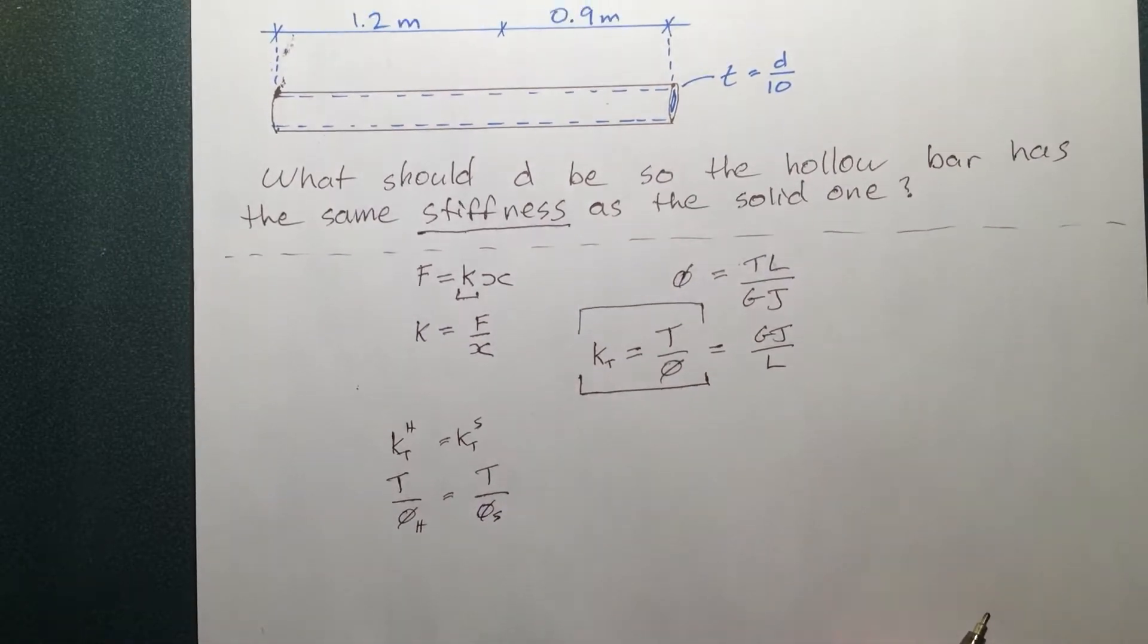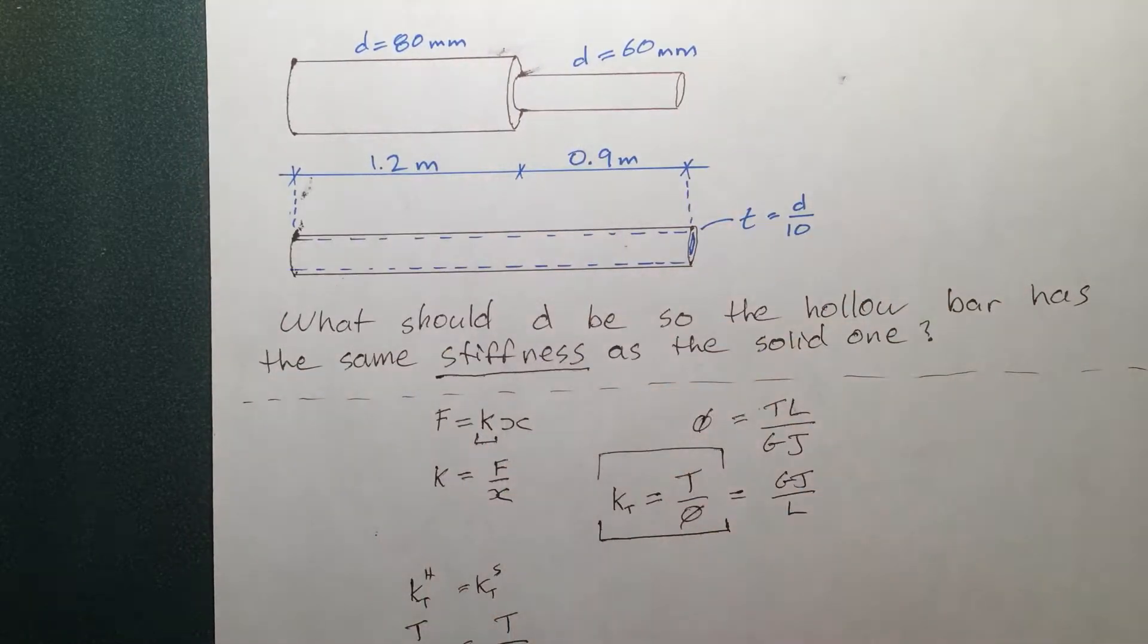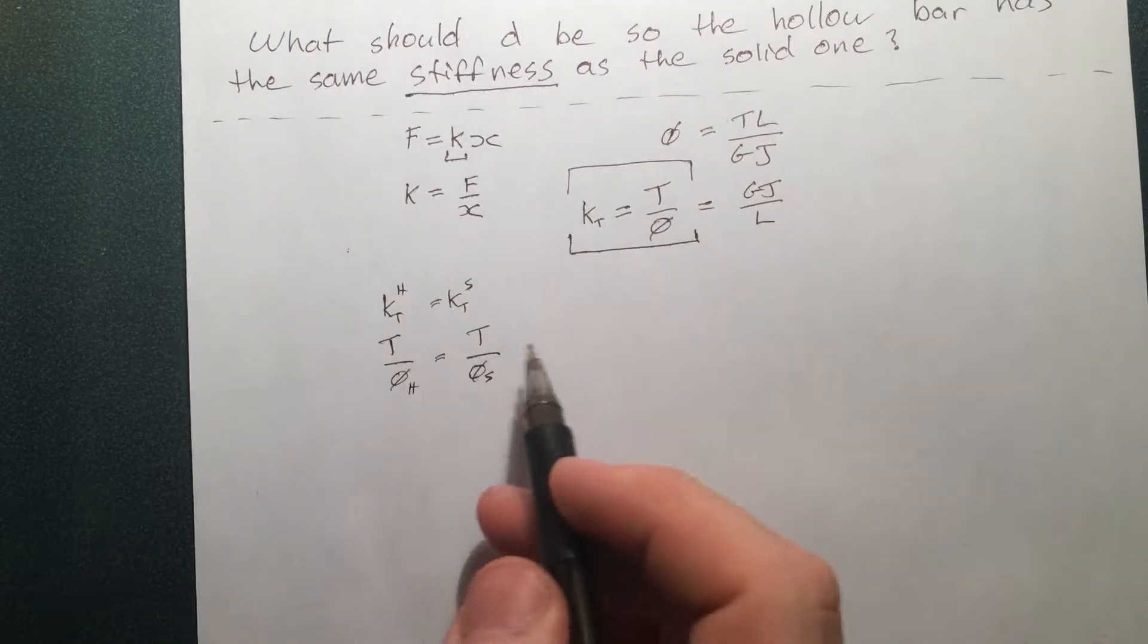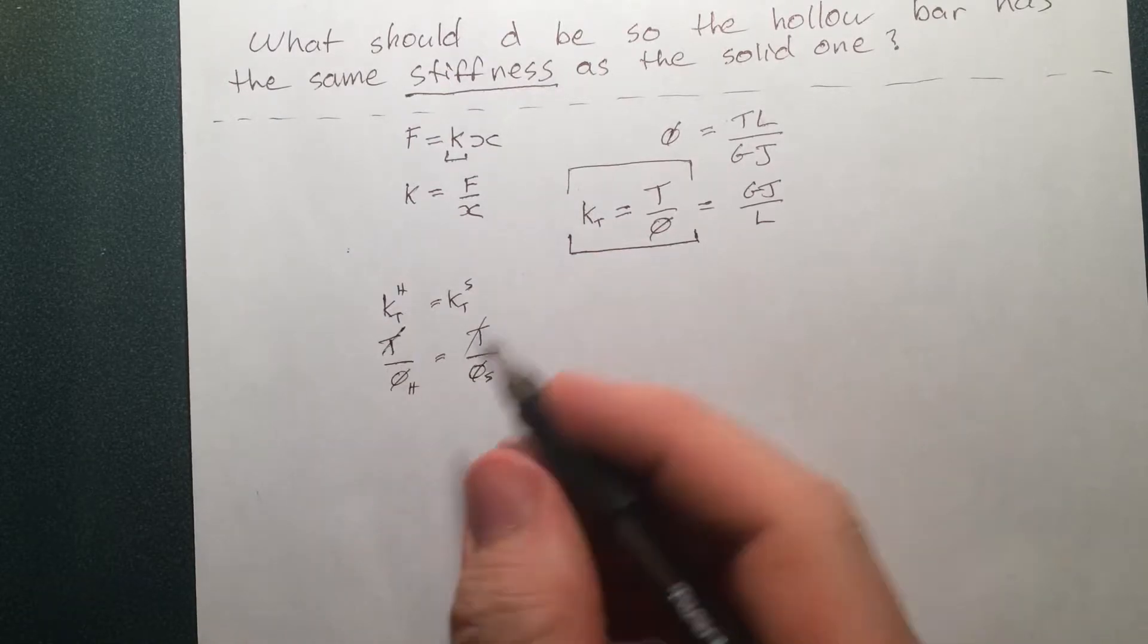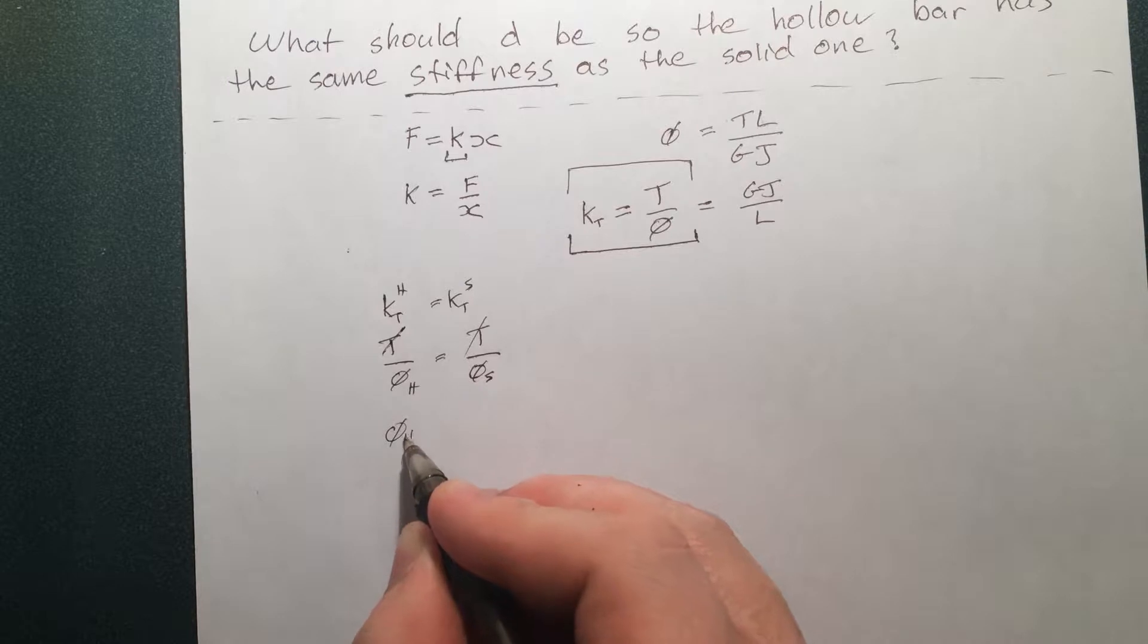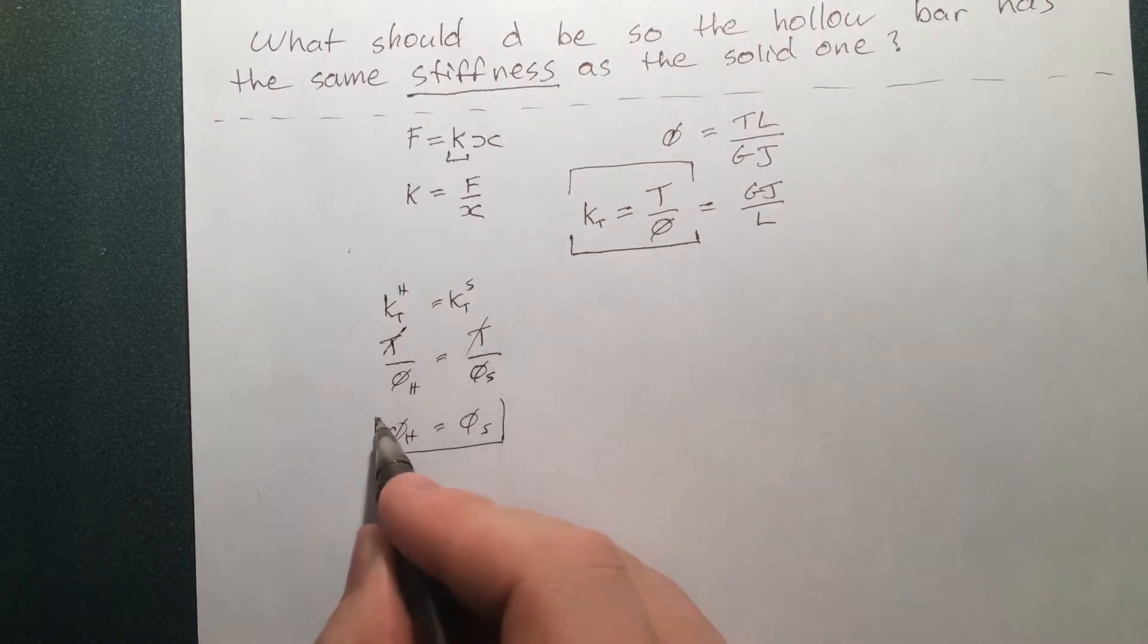T by phi hollow is equal to T by phi solid. We're going to assume that we're applying the same torque to this thing. And as a result, we're going to get the same internal torque everywhere. So I'm not going to label these with a subscript. So, boom, that goes away. Or we can write, phi hollow is phi solid. So this is the key equation.